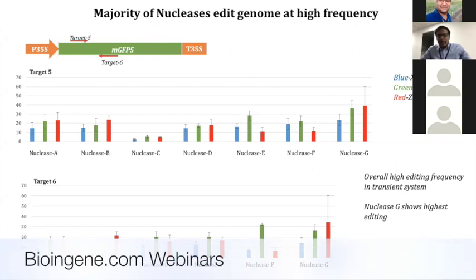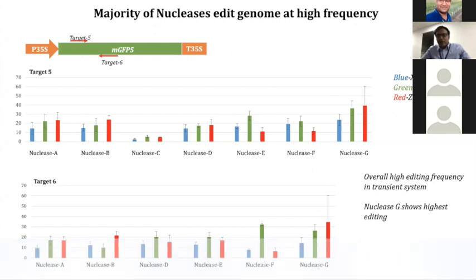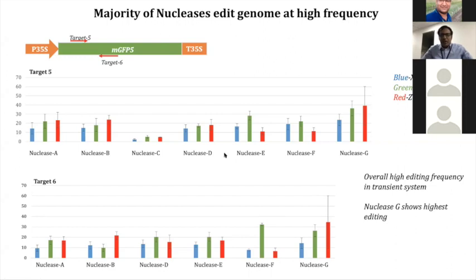For example, if you look at biolistics or agrobacterium-related delivery, you always have to select for the cells either using a selectable marker or using a gene that codes for fluorescence. Whereas here, we don't have any selection system and we are editing at a frequency of 10 to 60%.